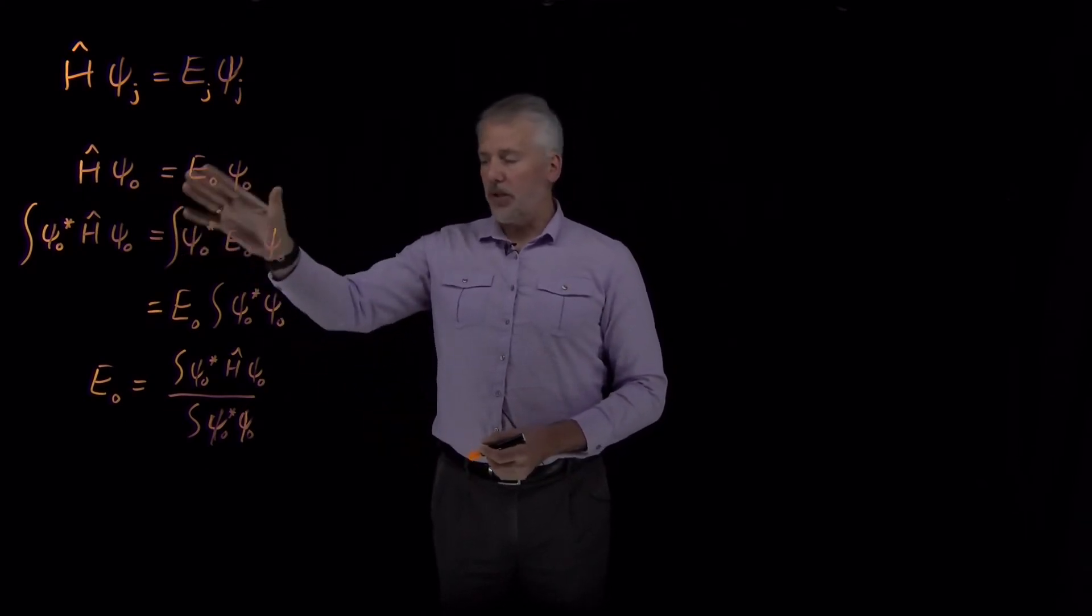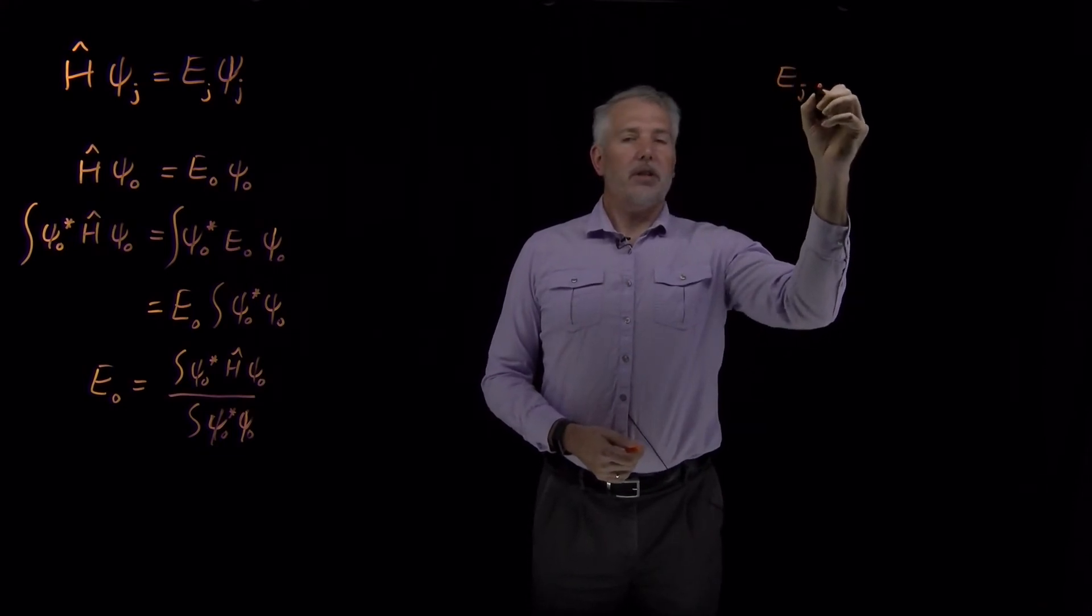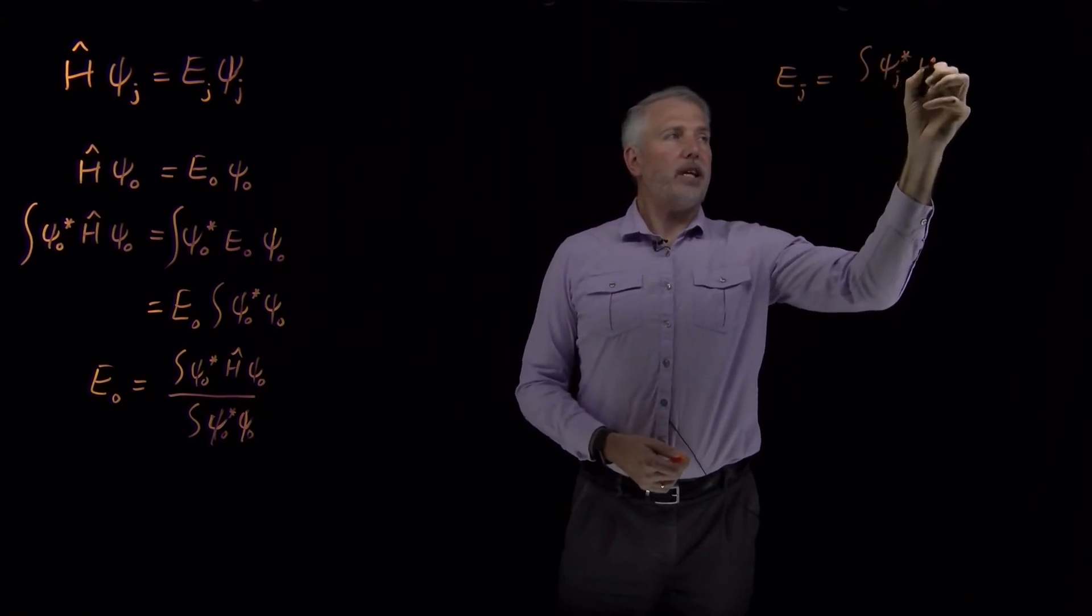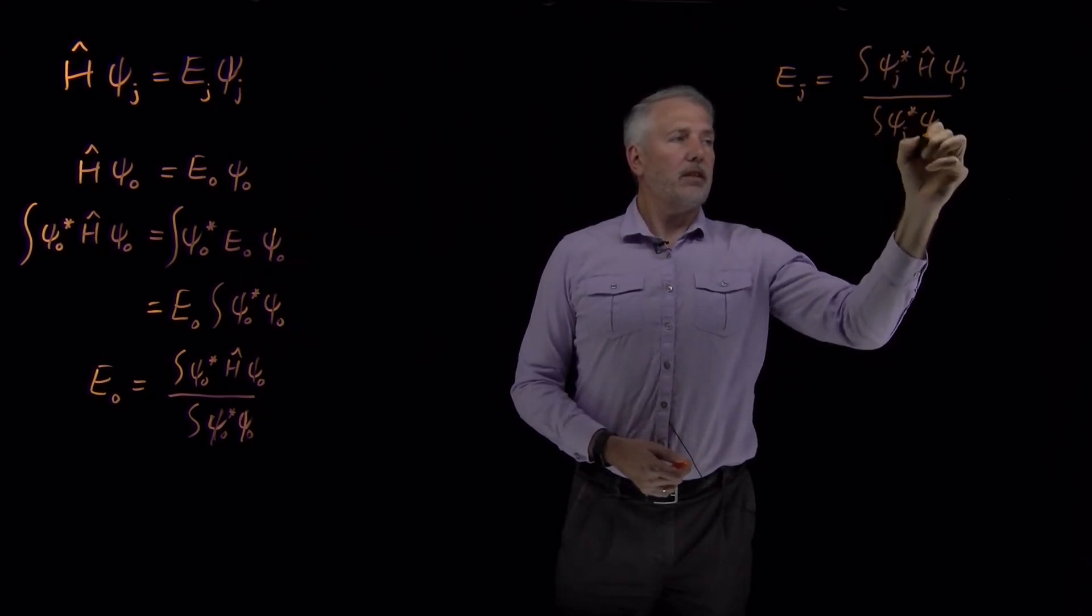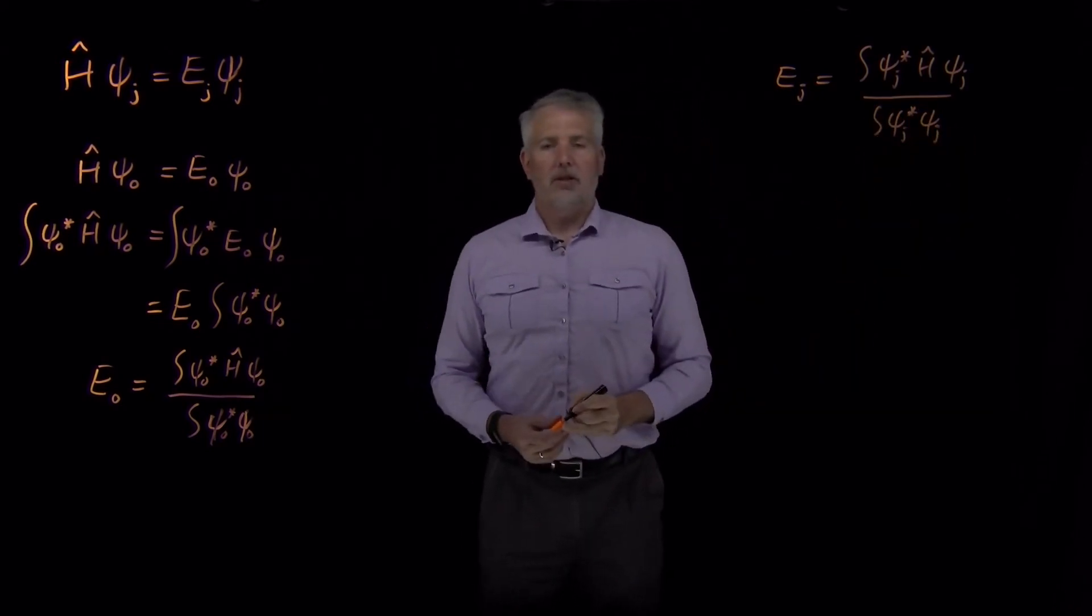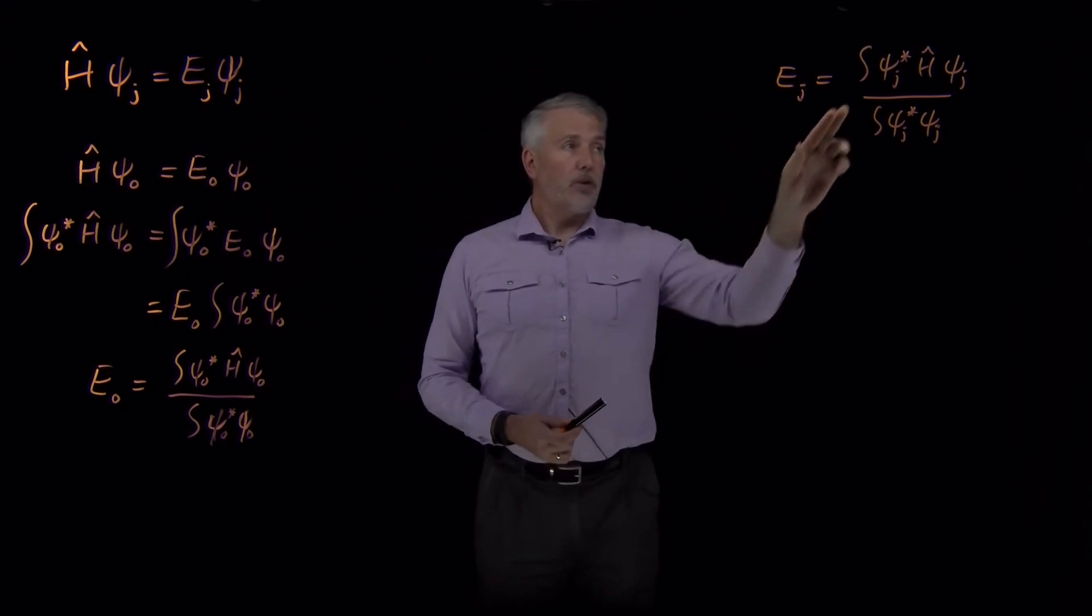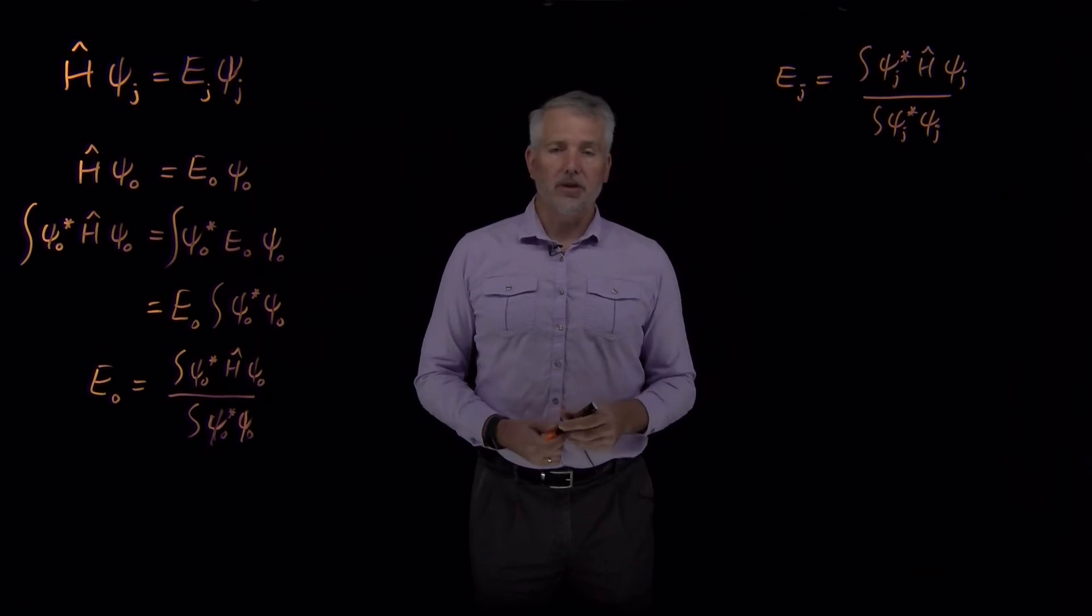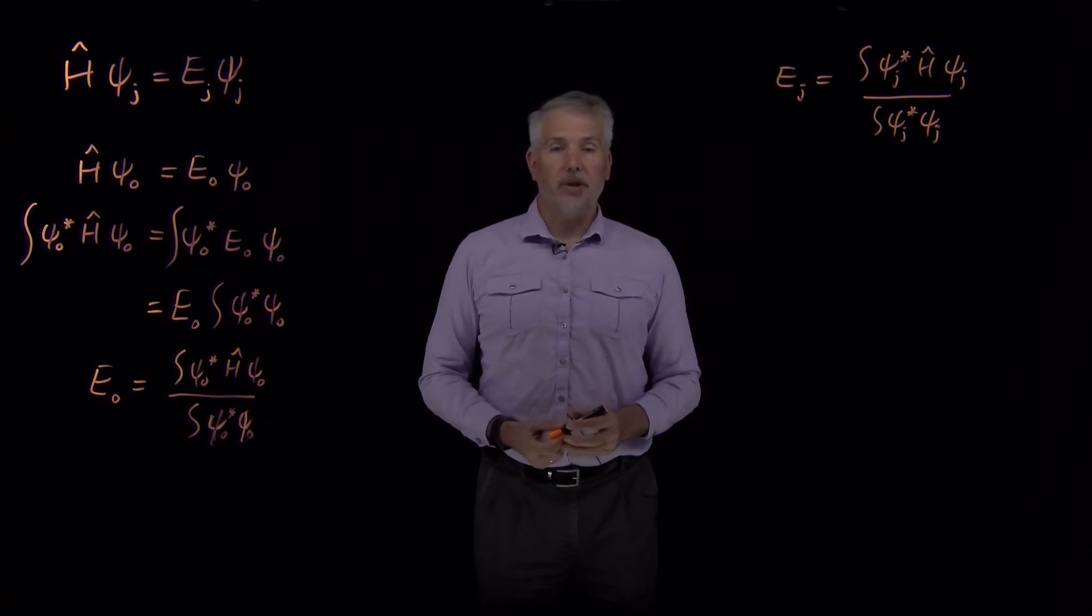The same thing would be true if I replace all these zeros for the ground state with a different index for a different wave function. I could find the energy of any particular wave function I want via this difficult technique. There's not yet any reason why I should do that if I know the wave functions, but what it does suggest is that even if I don't know the wave functions, remember we're hypothetically considering a case where we can't solve Schrödinger's equation and we don't know the wave functions, but let's say we can make a guess and even though we can't solve the Schrödinger equation, we can write down a function that might or might not be the correct wave function for the system.